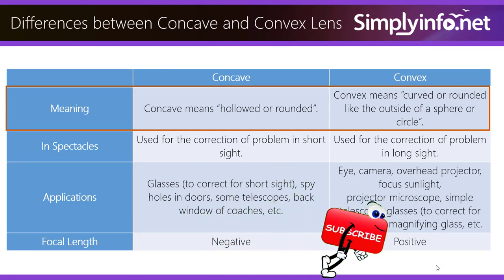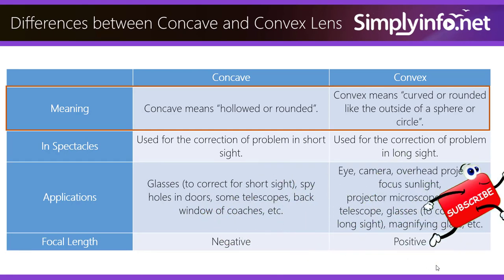Concave means hollowed or rounded inward. Convex means curved or rounded like the outside of a sphere or circle.